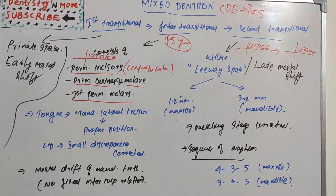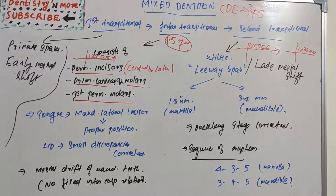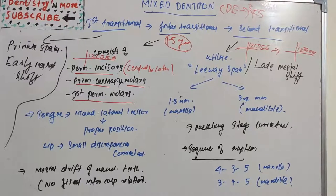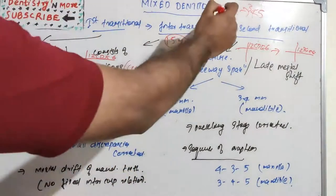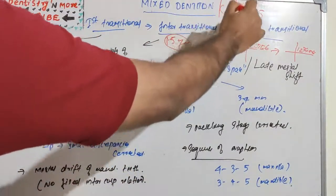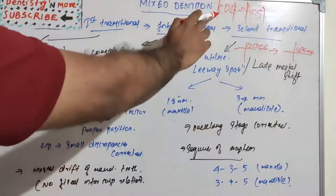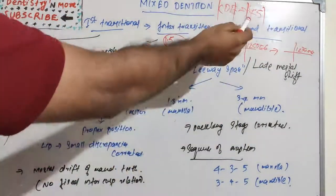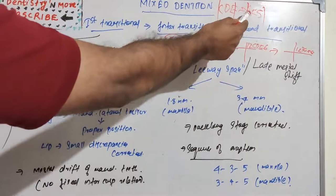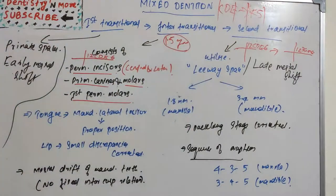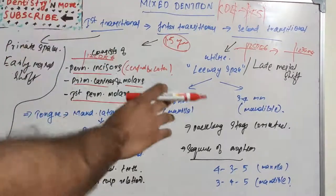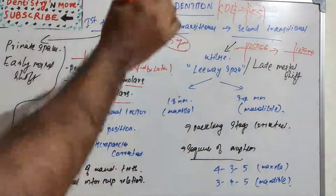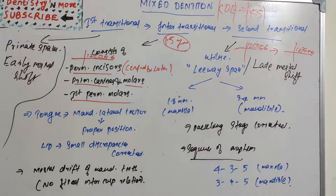So C, D, E will be replaced by four, five, and three. During this time the late mesial shift is happening, using the leeway space. Leeway space is the difference in mesiodistal diameter of the primary canine and molars against permanent canine and premolars. If space is not available to accommodate the permanent molars, the teeth use leeway space during the second transitional phase.